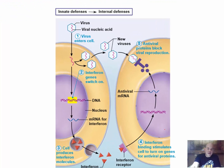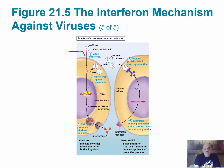This diagram allows us to visualize the production of interferons. On the left, you have a host cell that has been infected. A virus enters and begins to replicate, but this also triggers a chain that produces interferons. The interferon gene gets transcribed, producing mRNA for interferon, and interferon is likely produced in the rough endoplasmic reticulum. A secretory vesicle is then produced containing the interferon.